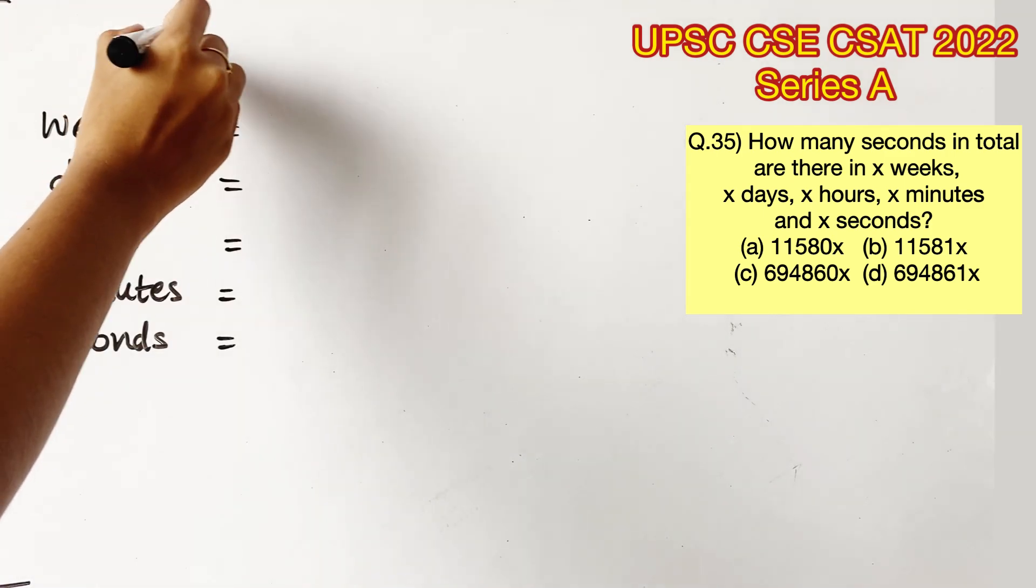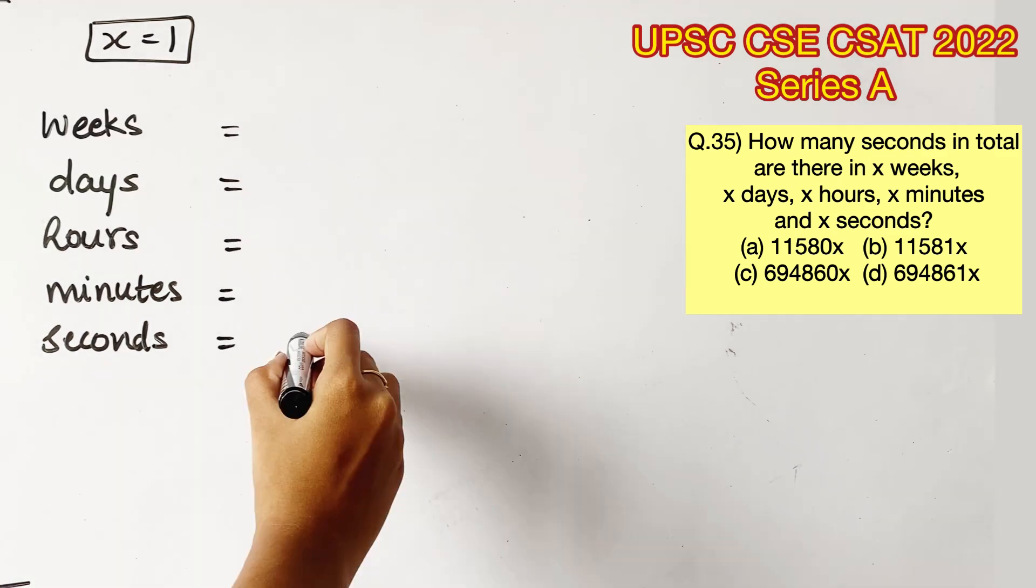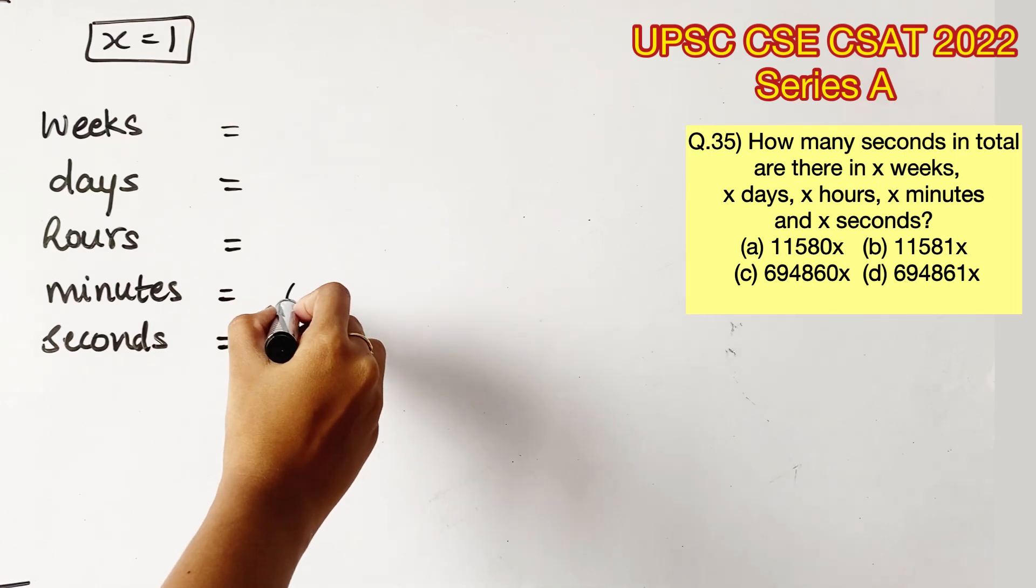Let us consider x is equal to 1. So how many seconds are there in 1 second? It's 1. Then how many seconds are there in 1 minute? 60 seconds comprises 1 minute.